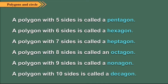A polygon with five sides is called a pentagon. A polygon with six sides is called a hexagon. A polygon with seven sides is called a heptagon. A polygon with eight sides is called an octagon. A polygon with nine sides is called a nonagon. A polygon with ten sides is called a decagon.